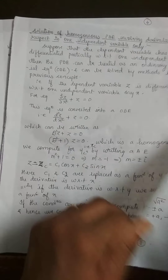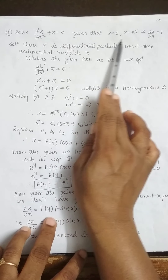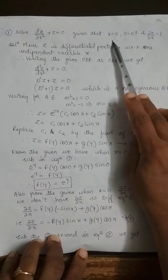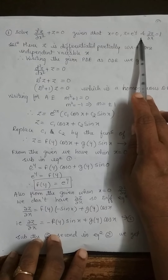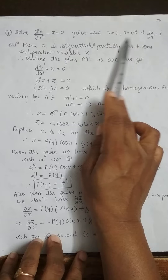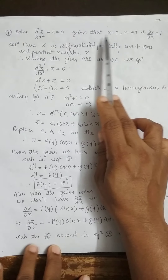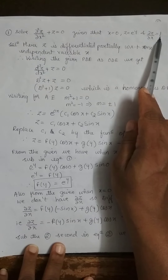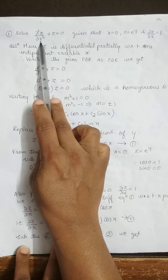First problem: Solve ∂²z/∂x² + z = 0, given that when x = 0, z = eʸ and ∂z/∂x = 1. The conditions are given to find the function values. Since the equation is of order 2, two conditions are given. When x = 0, z = eʸ, and when x = 0, ∂z/∂x = 1. Now z is differentiated with respect to one independent variable x, so we convert to an ODE.